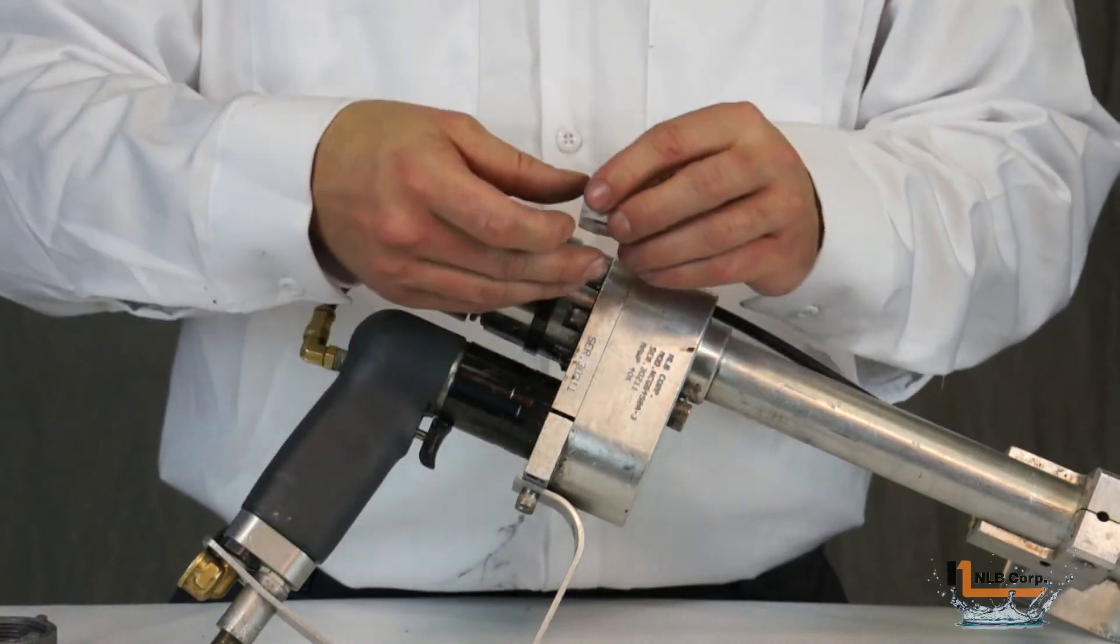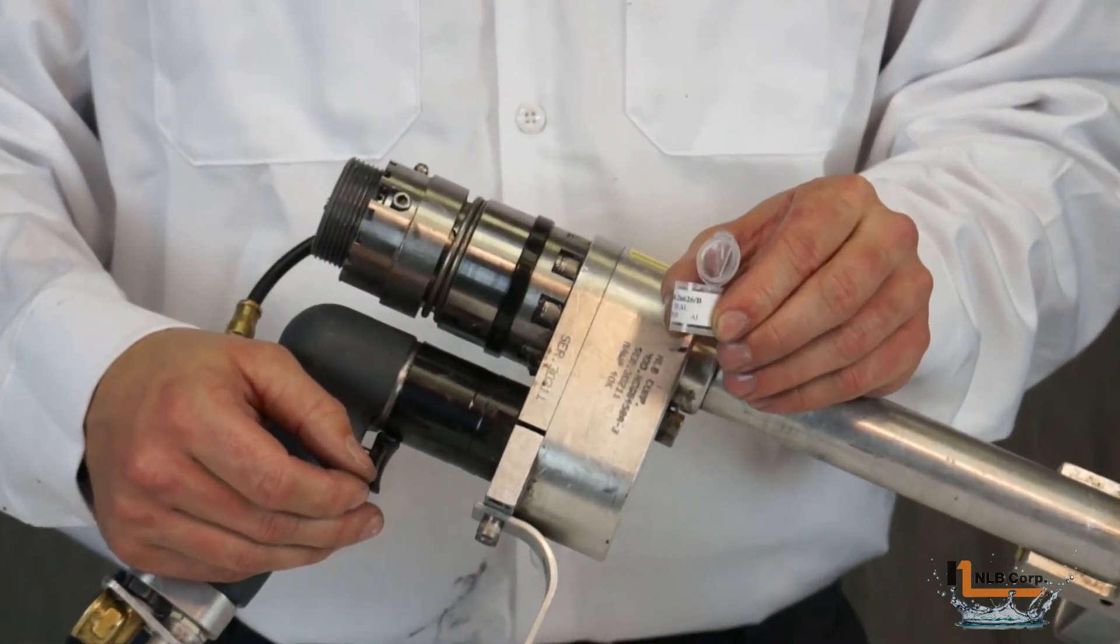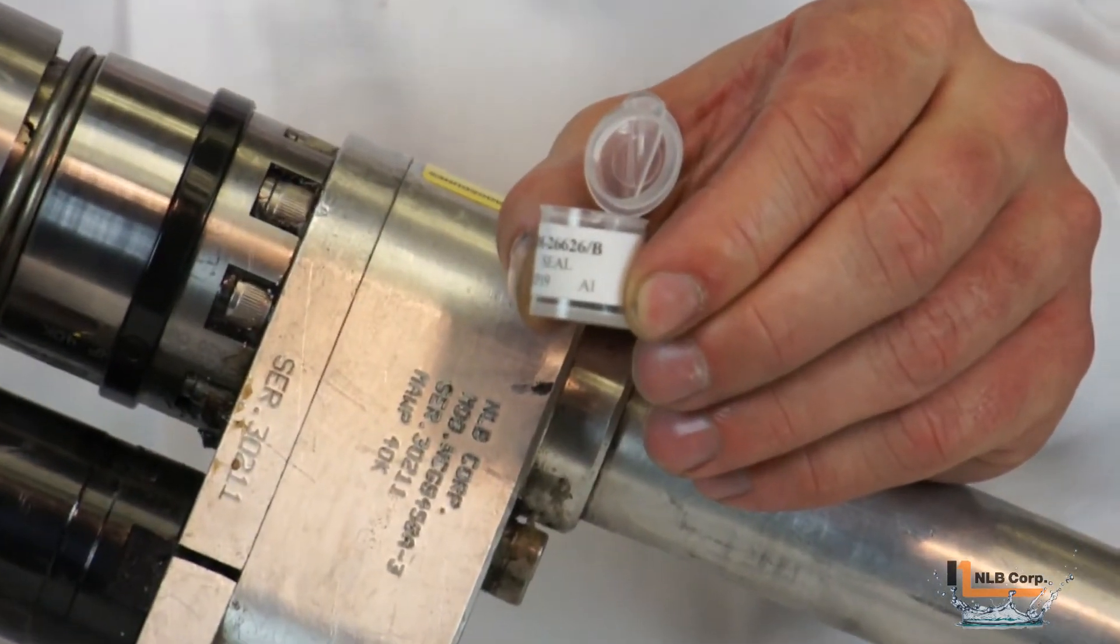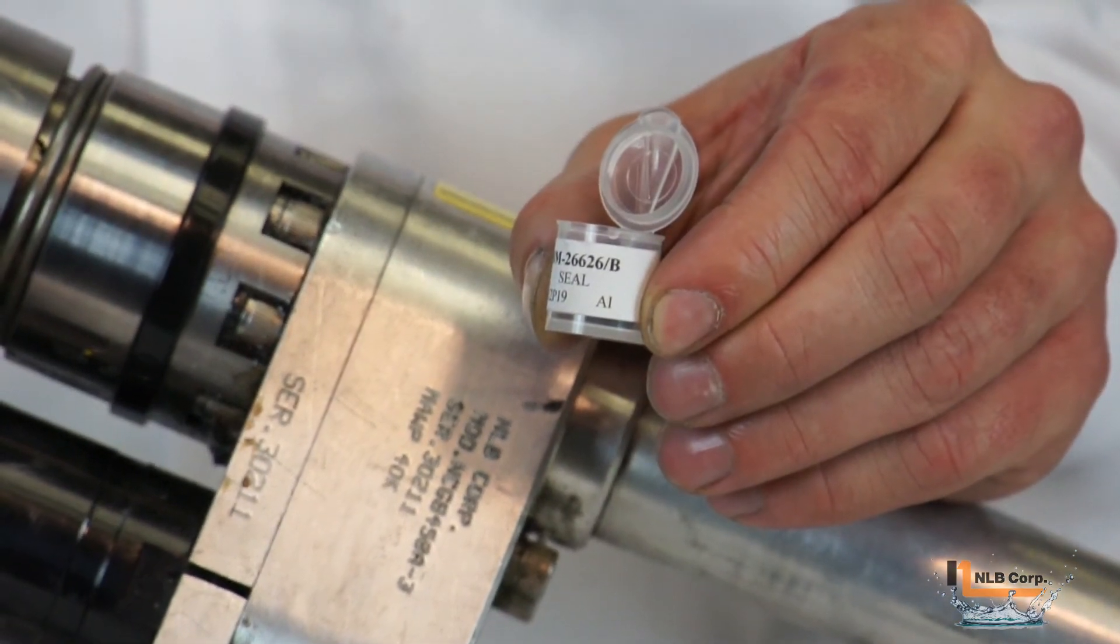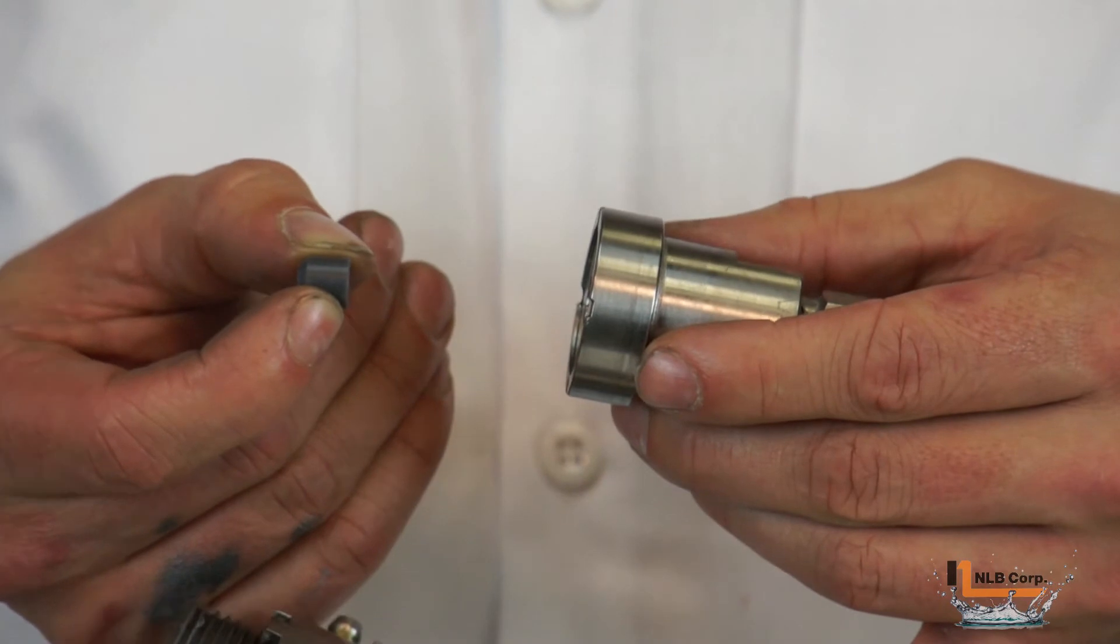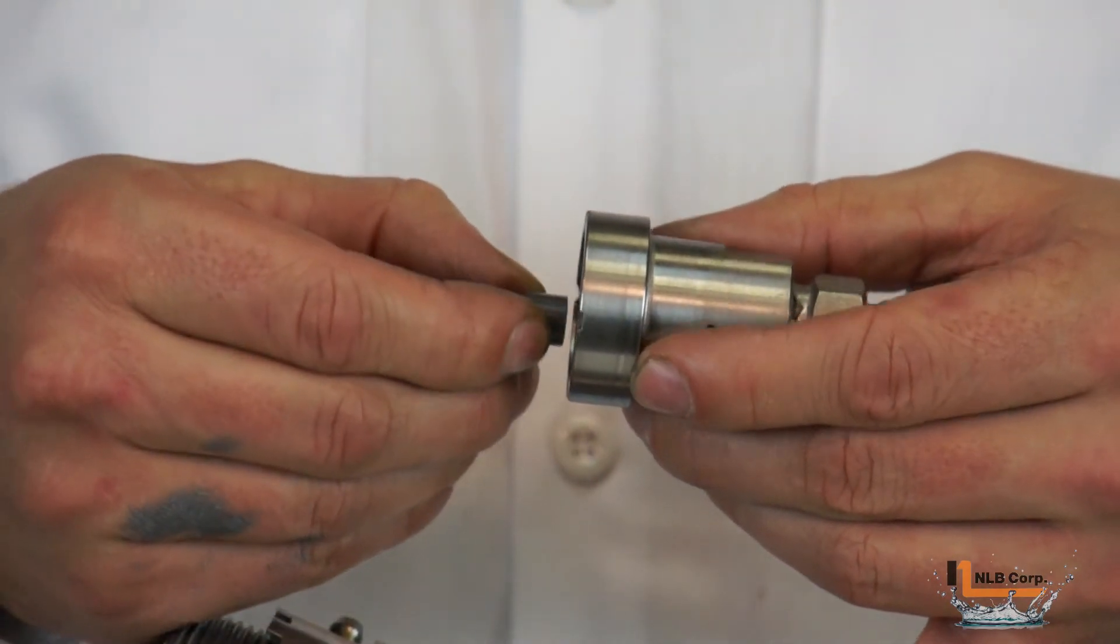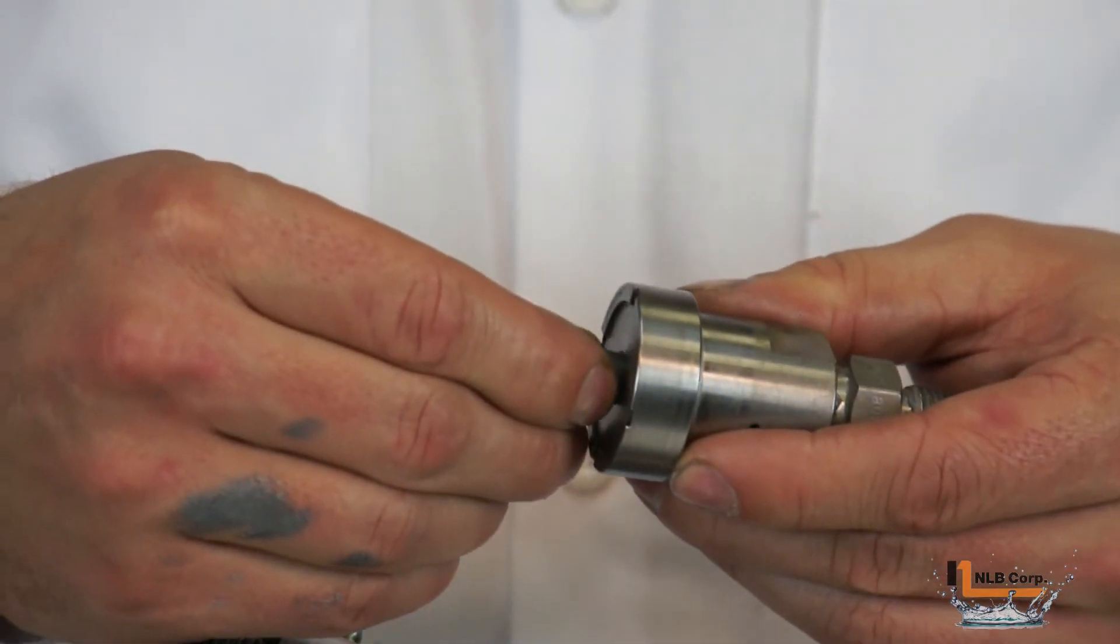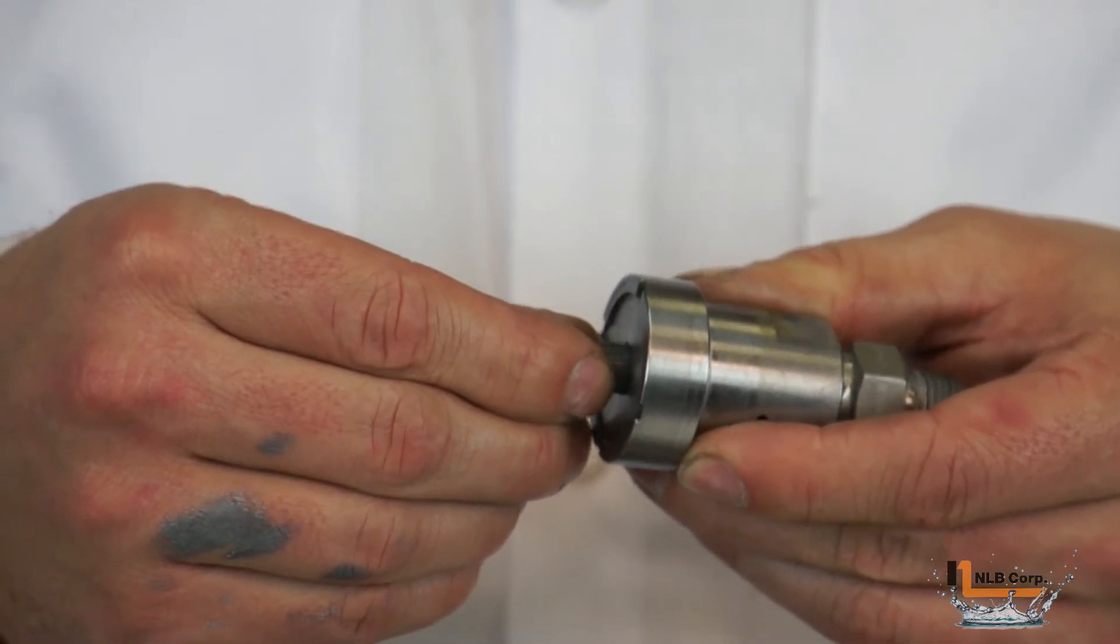The seal ships from NLB in a small plastic container. It should remain in this container until it is ready to be installed. Remove the seal from the container and install it flat side down so that the tapered portion of the seal is facing outward.